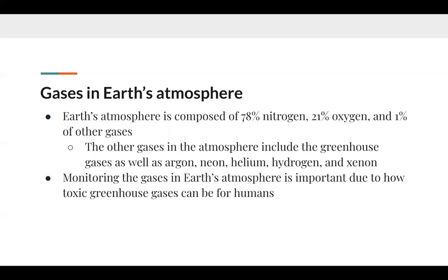Earth's atmosphere is composed of 78% nitrogen, 21% oxygen, and 1% of other gases including argon, neon, helium, hydrogen, as well as greenhouse gases. Monitoring the gases in Earth's atmosphere is important due to how toxic greenhouse gases can be for humans. Although greenhouse gases make up less than 1% of Earth's atmosphere, their ability to trap heat can make them very lethal in high amounts, leading to heat waves and other natural disasters caused by warmer temperatures.